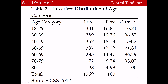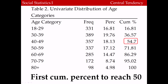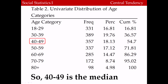Take a look at this table. It shows the distribution for the variable age, broken down into age categories. To find the median, we look at the cumulative percent column and figure out which is the first to include 50%. The category 40 to 49 is the first to include 50%, with 54.7% of the distribution. Therefore, 40 to 49 is the median. We would interpret that by saying that half the distribution is age 49 or younger, and the other half is above the age of 49.